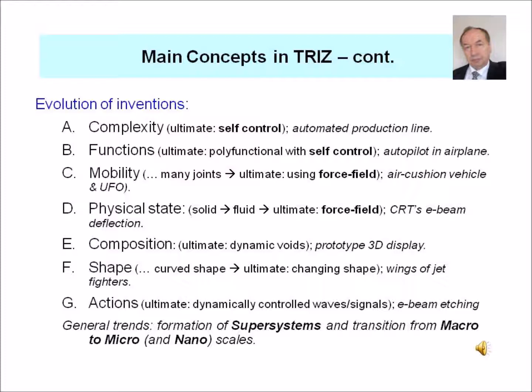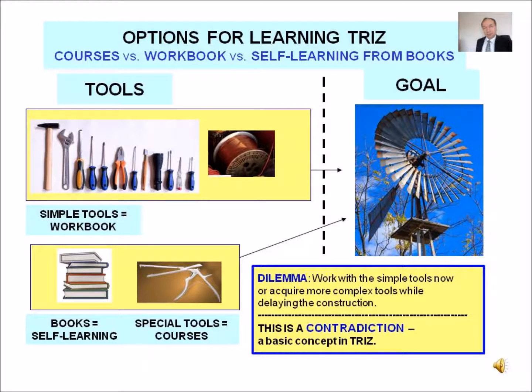The general trend is that supersystems are formed from subsystems, and in some inventions the transition proceeds from macro to micro and nanoscales. Essentially, you have three options for learning the invention algorithm: you can take a course, you can study the invention algorithm from books, or you can proceed with the workbook, and with the simple tools presented in the workbook you can start immediately working on solving your inventive problem. Those simple tools are actually very powerful.